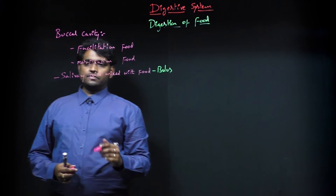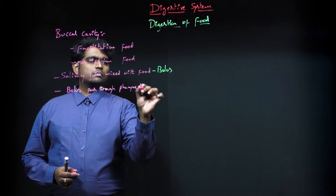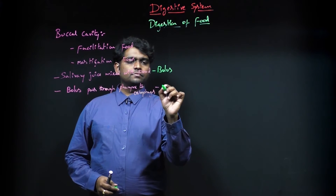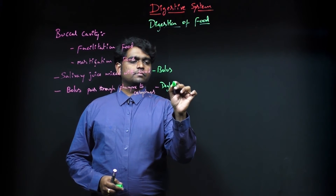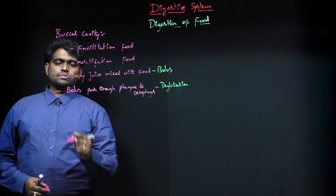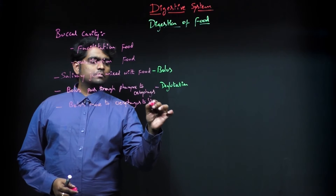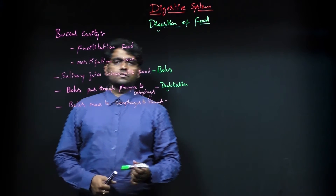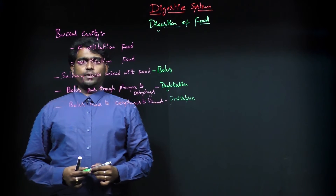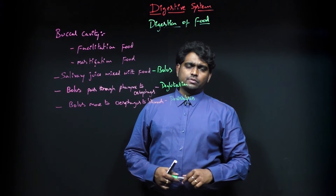This bolus is passed through the pharynx to the esophagus — that is called deglutition. The bolus then moves from the esophagus to the stomach. The movement of the bolus through the esophagus to the stomach is called peristalsis movement.